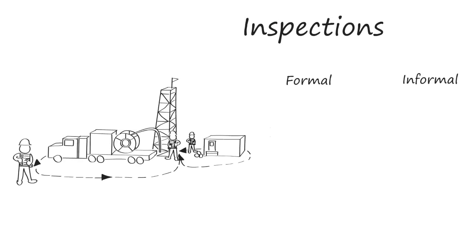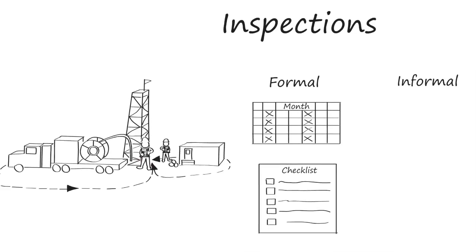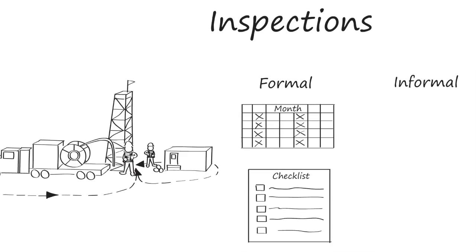Inspections come in both formal and informal varieties. Formal inspections are typically scheduled with written, itemized requirements and checklists. Informal inspections are regular and ongoing, and may be included in job descriptions or built into tasks.